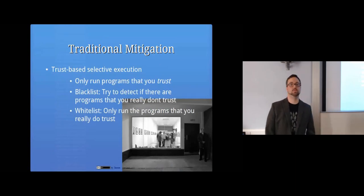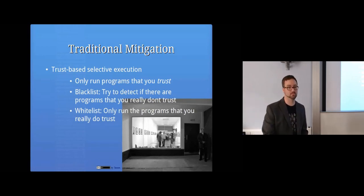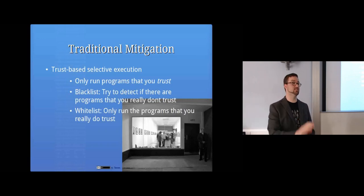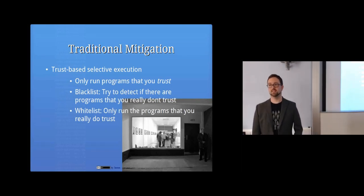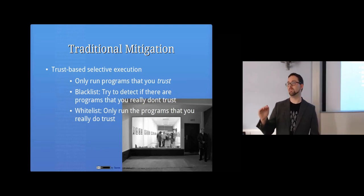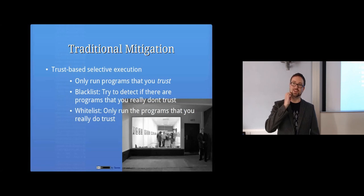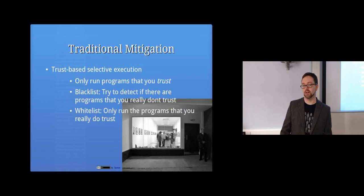The traditional way of protecting yourself is trust-based selective execution — only run certain programs. You might have a blacklist of programs you don't trust, such as anti-malware software with a list of programs it'll stop you from running. Or a more secure but practically difficult approach is a whitelist — only trusting programs from specific places. On a locked-down corporate network a whitelist might be worthwhile: saying you'll only run Adobe and Microsoft software, for example, would make the computer very secure but very hard to use for anything else.